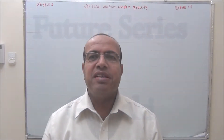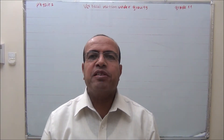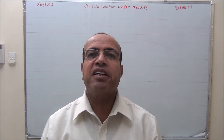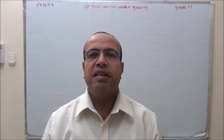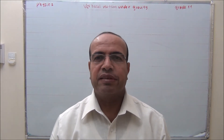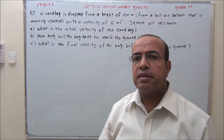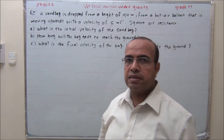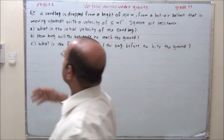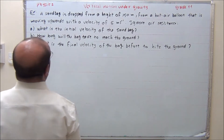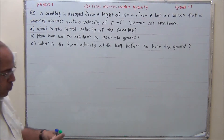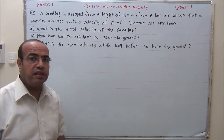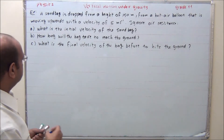Hello everyone. In this video I explain vertical motion under gravity. Let us see this example: a sandbag is dropped from a height of 150 meters.